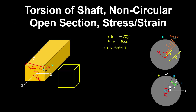This warping displacement in the Z direction, denoted W, depends on the rate of twist multiplied by a warping function, which we denote psi, and which depends on X and Y.